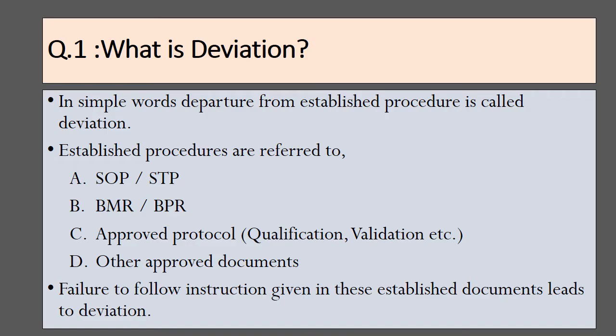In simple words, departure from any established procedure is called deviation. Established procedures refer to standard operating procedures, standard test procedures, batch manufacturing records or batch packaging records, and approved protocols like qualification or validation protocols, or any other approved documents. Intentional or unintentional failure to follow instructions given in these established documents leads to deviation.